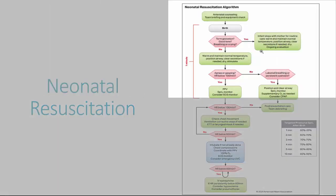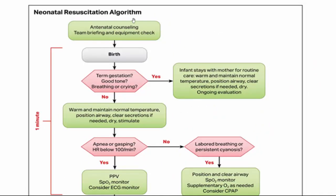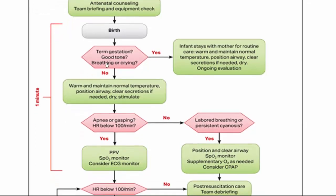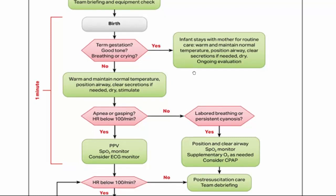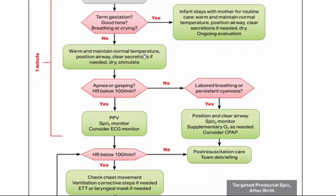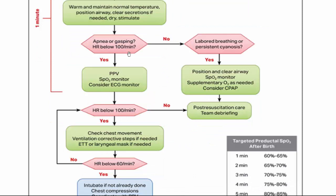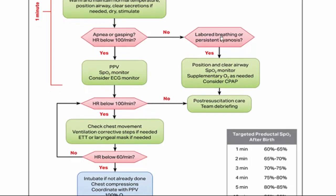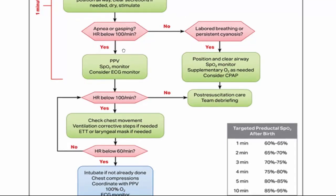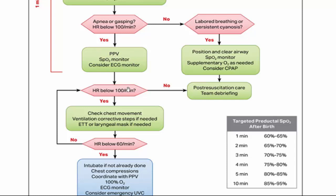Looking at the neonatal resuscitation algorithm, it is structured as a decision flowchart. At birth, ask: is it term gestation? Do we have good tone, breathing, and crying? If yes, follow routine care — warming, drying, positioning, and ongoing evaluation. If no, warm and maintain normal temperature, position airway, clear secretions if needed, dry and stimulate. Then assess: is the newborn experiencing apnea or gasping? If labored breathing or persistent cyanosis is present, perform positioning, clear airway, apply SpO2 monitoring, supplemental oxygen, and CPAP. If apnea or gasping with heart rate below 100, begin positive pressure ventilation, SpO2 monitoring, and consider ECG monitoring.